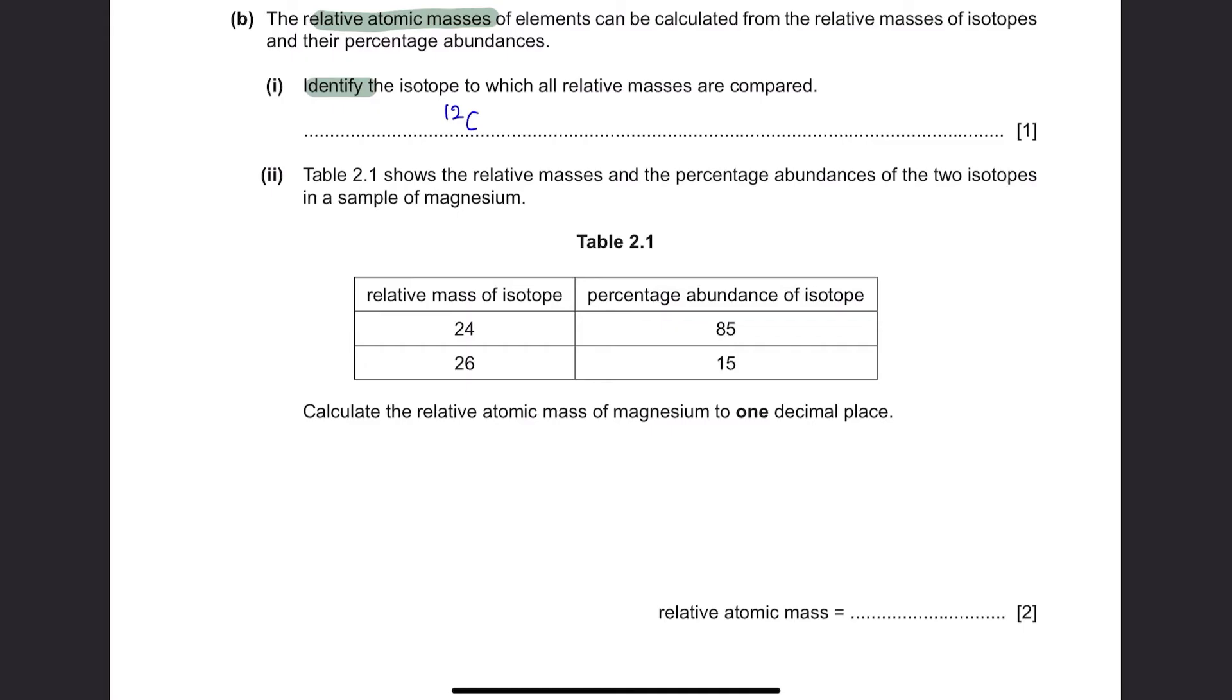Part 2. Table 2.1 shows the relative masses and the percentage abundances of the two isotopes in a sample of magnesium. The total percentage abundance here is 100%. Calculate the relative atomic mass of magnesium to one decimal place. Relative atomic mass calculations are very methodical. We are going to multiply each mass by its percentage and then dividing it by 100. This will give you one mark. The question asks your answer to be in one decimal place. So, the calculation here would give you 24.3. And this will give you your second mark. Relative atomic masses have no units so you can just leave your answer as 24.3.